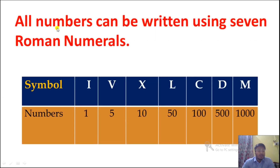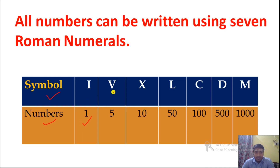All numbers can be written using 7 Roman numerals. Using these we can write any number. So here we have the symbols and their values. The first symbol is I and its value is 1. The second symbol is V and its value is 5. Then we have X with value 10, C with value 100, D with value 500, and M with value 1000.